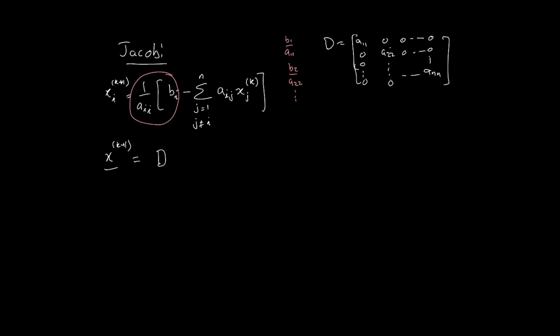Now, you should know that D inverse is simply 1 over a11, 1 over a22, all the way down to 1 over a_n,n, and there are 0s everywhere else. So D inverse times the vector B should take care of this first bit.